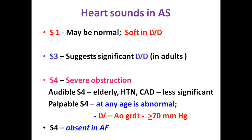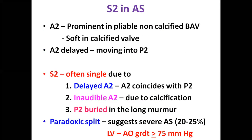S2 is important in assessing severity. A2 may be prominent in a non-calcified bicuspid aortic valve in children and young adults, but becomes soft in calcified valves after age 40. In severe aortic stenosis, A2 is delayed, moves into P2, and most often you get a single second sound — either delayed A2 coinciding with P2 (the ear cannot distinguish two sounds less than 30 ms apart), A2 inaudible due to calcification, or P2 buried in the long murmur. Paradoxical split is seen in a small percentage with severe AS with LV gradient more than 75 mmHg. An ejection click may be heard with a bicuspid aortic valve — constant, not moving with respiration, heard best at the left sternal border, unusual beyond 40 years due to calcification.